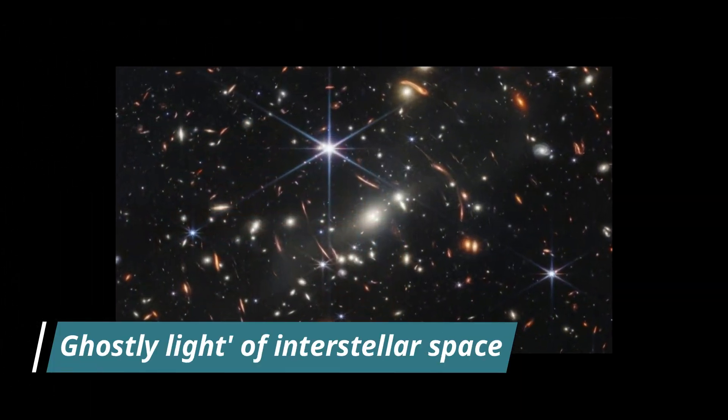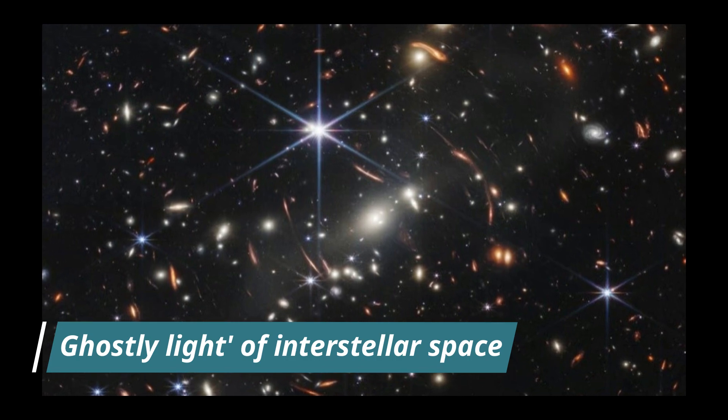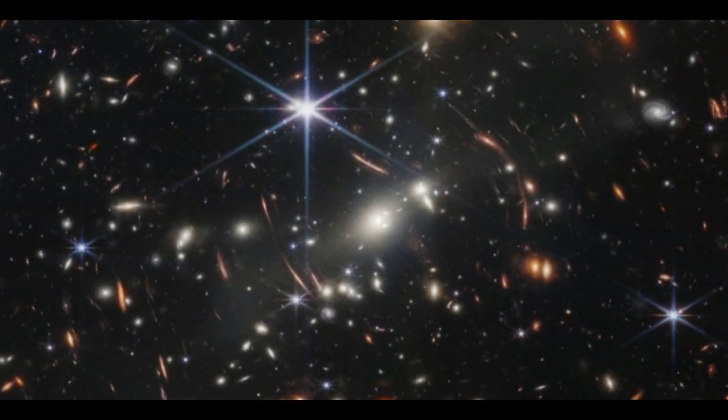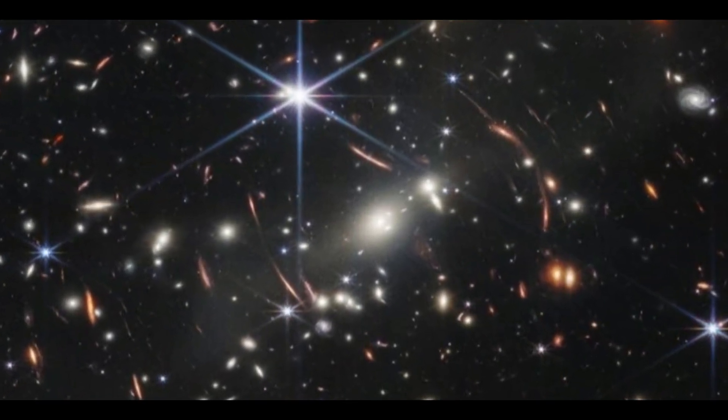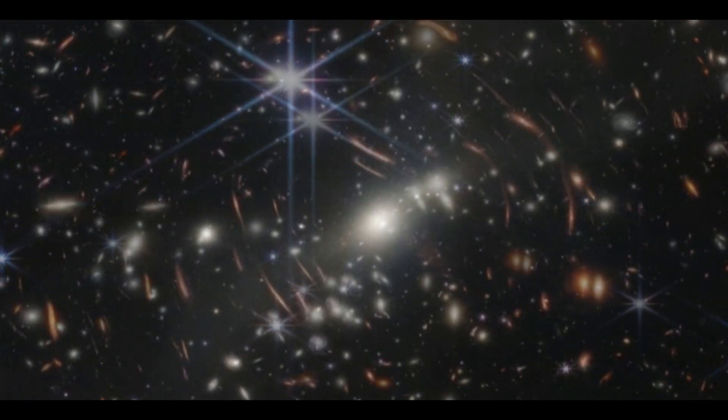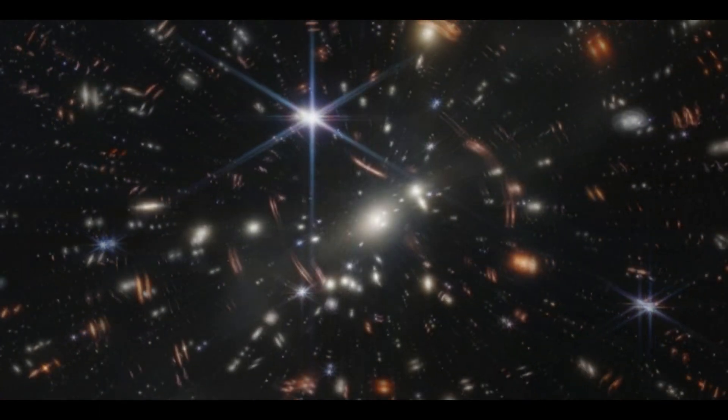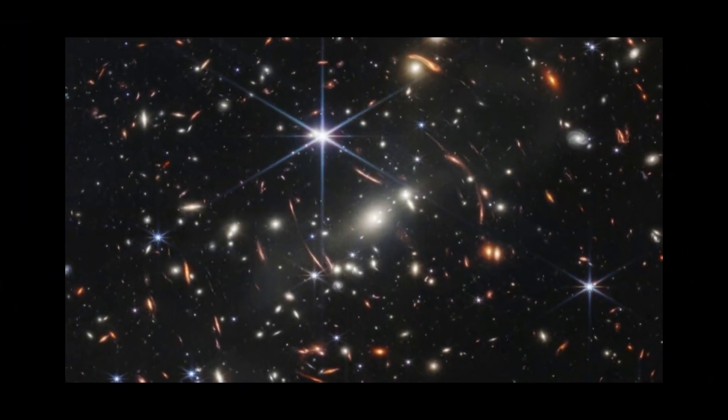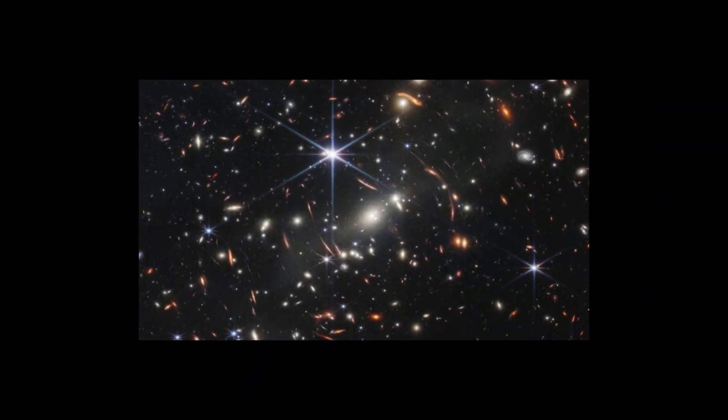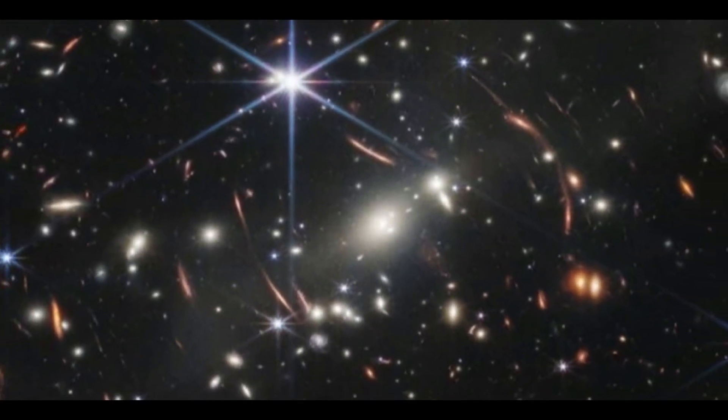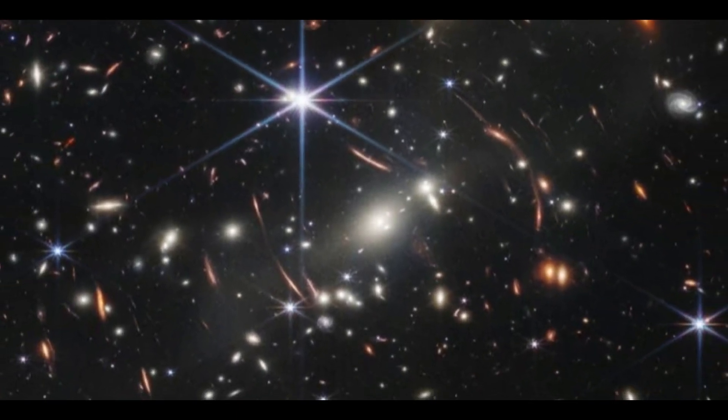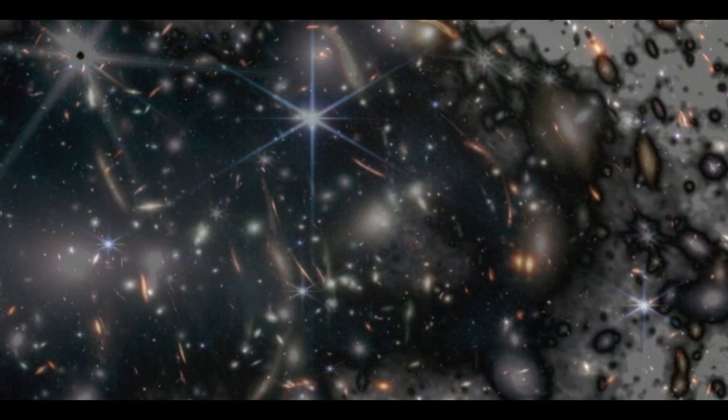Number 6, ghostly light of interstellar space. The dim light emitted by orphaned stars that live between galaxies in galaxy clusters is featured in the Space Telescope's first deep-field photograph. The James Webb Space Telescope's first deep-field image of the universe has allowed scientists to analyze the dim, almost ghostly light from orphaned stars that dwell between galaxies in galaxy clusters.